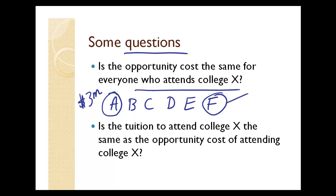Person F doesn't have as high an opportunity cost of attending college. Suppose for person F, the income that he forfeits is ten thousand dollars. So the opportunity cost of these two individuals, A and F, is not the same for attending college.